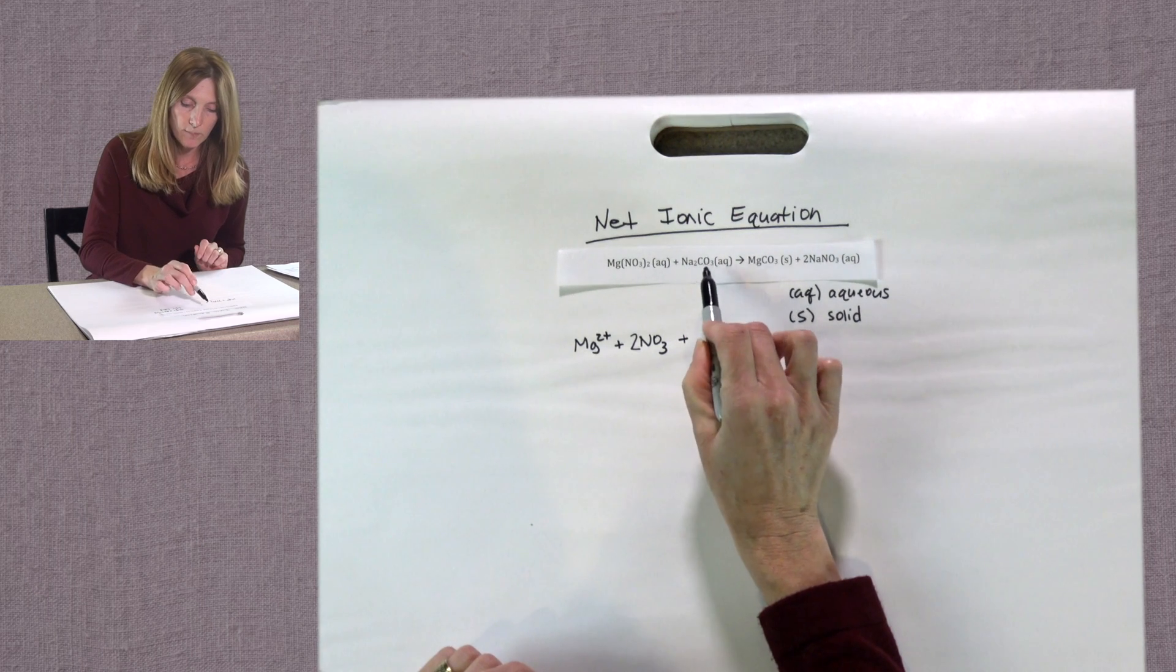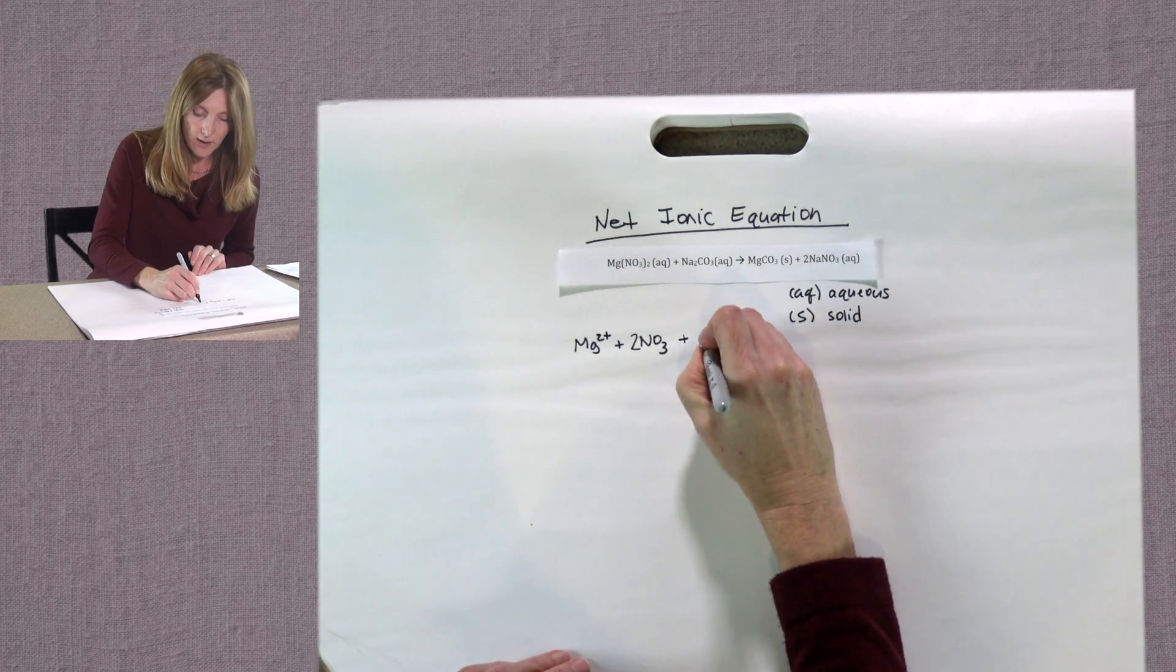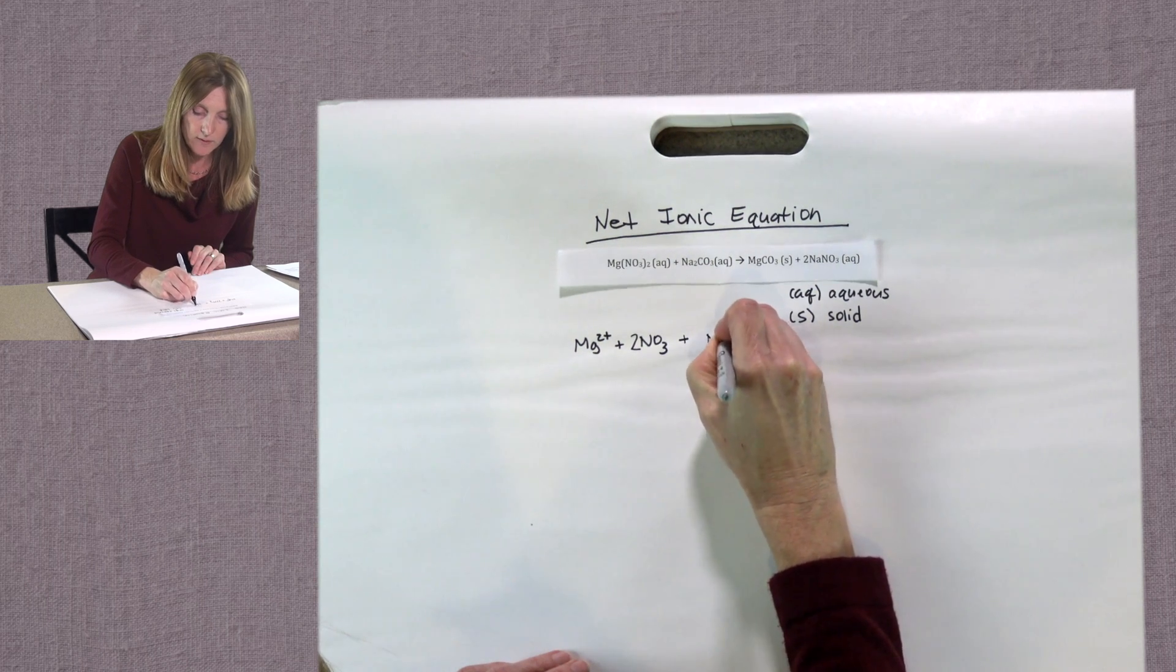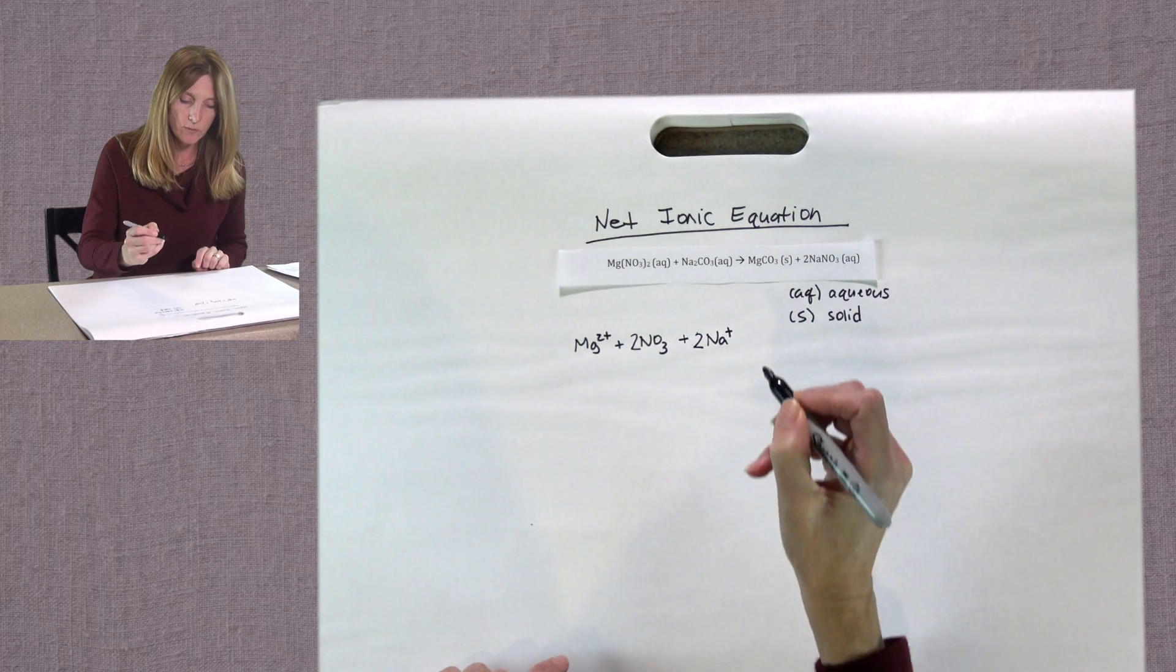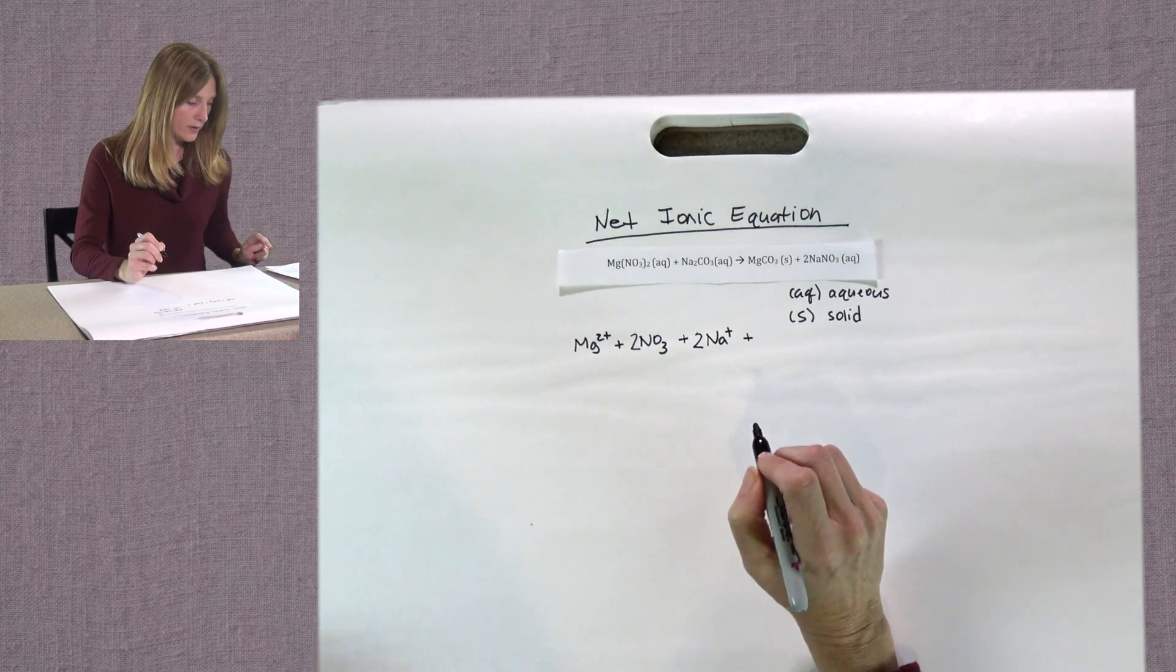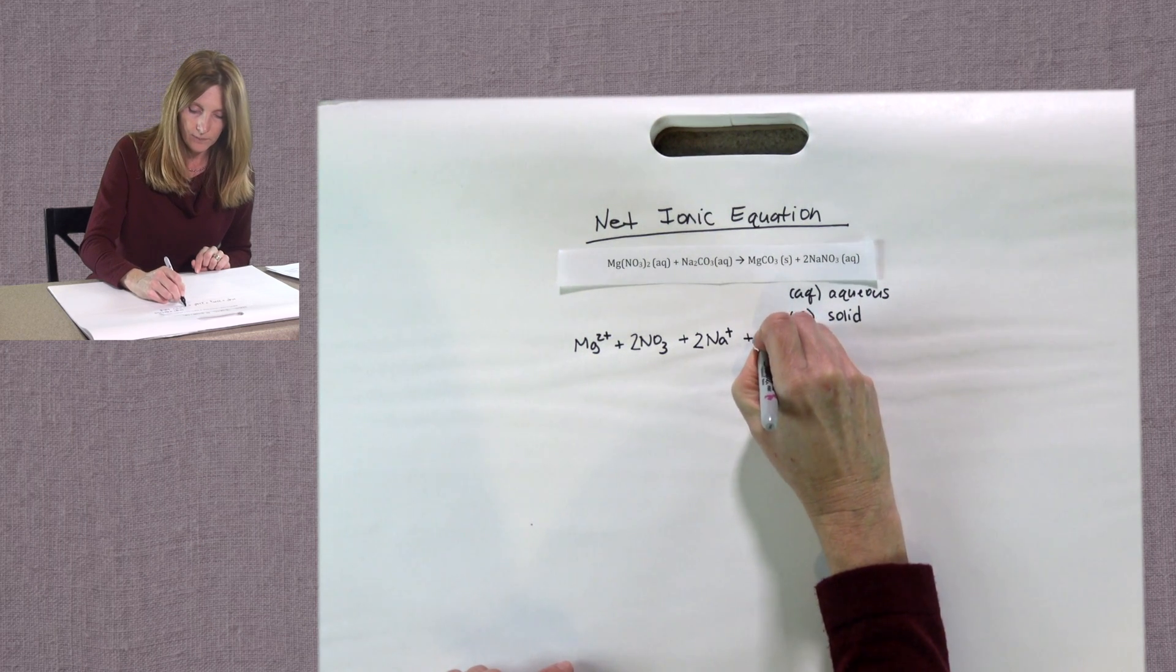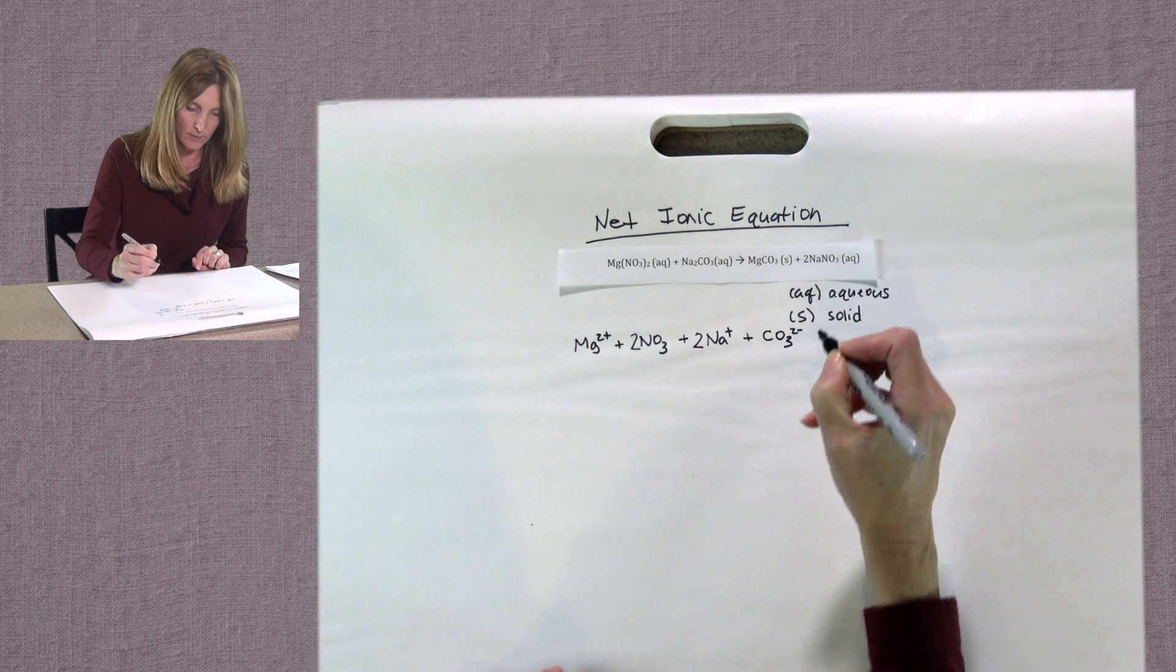Okay, so we're on sodium carbonate. It will come apart to the sodium ion, which is Na plus. And again, there's a subscript two after it, which means we will have two of those ions. And it will also come apart into the carbonate ion, CO3 2 minus.